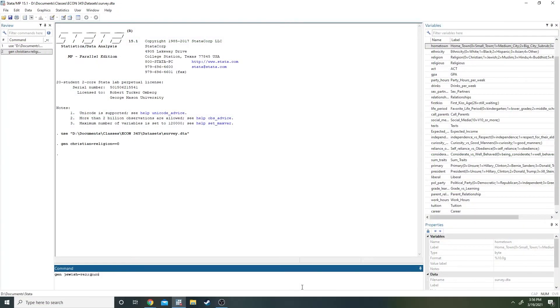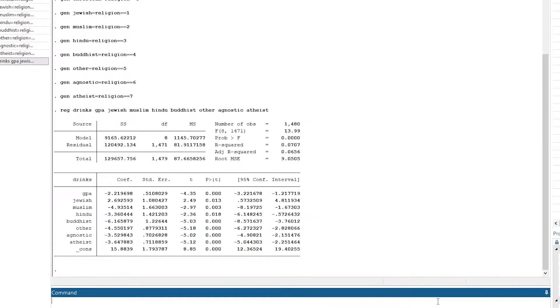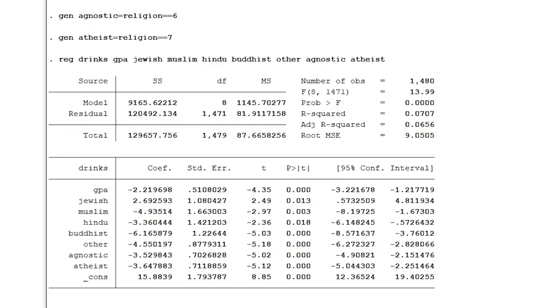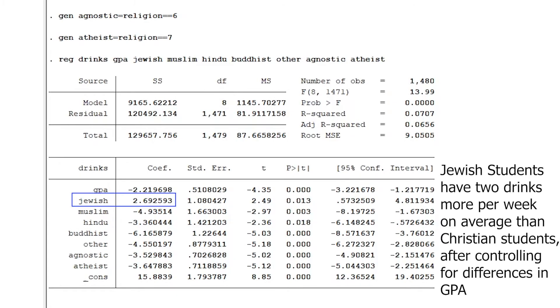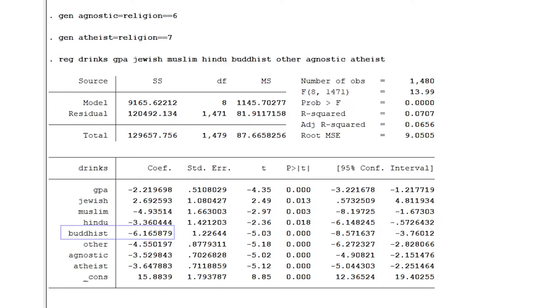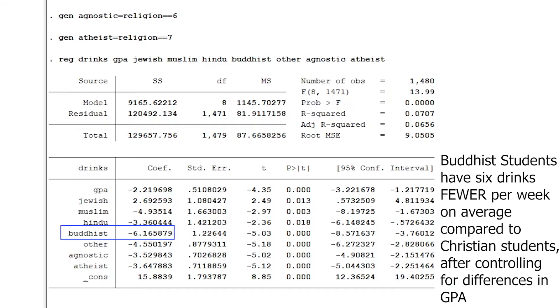We want to examine the effect of religion on alcohol consumption, but just adding this religion variable to our regression doesn't make much sense. Instead, let's make a dummy variable for each religion and then add all but one as independent variables in our model. We can't include all seven because then the religion variables will all sum to one for every observation, creating perfect collinearity. It doesn't matter which one we omit. So, let's regress our drinks variable on GPA and our six religion dummies, giving us these results. Since we omitted the variable that indicates that a person is a Christian, this coefficient is telling us that Jewish students have about two and a half more drinks per week than Christian students after controlling for differences in GPA. And this coefficient is telling us that Buddhist students have about six fewer alcoholic drinks per week than Christian students after controlling for GPA.